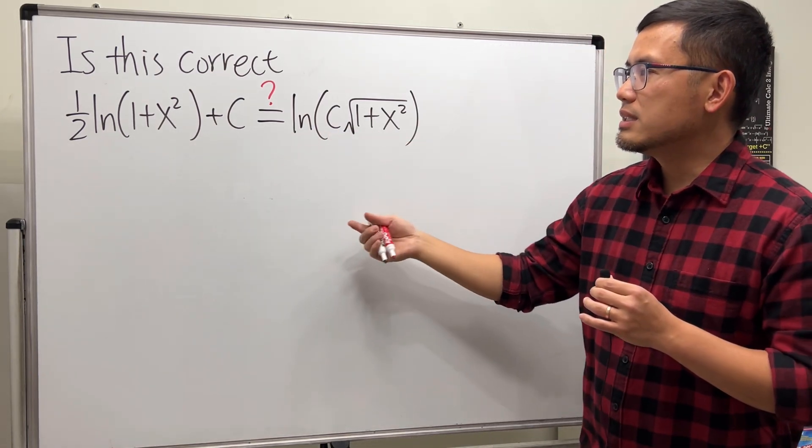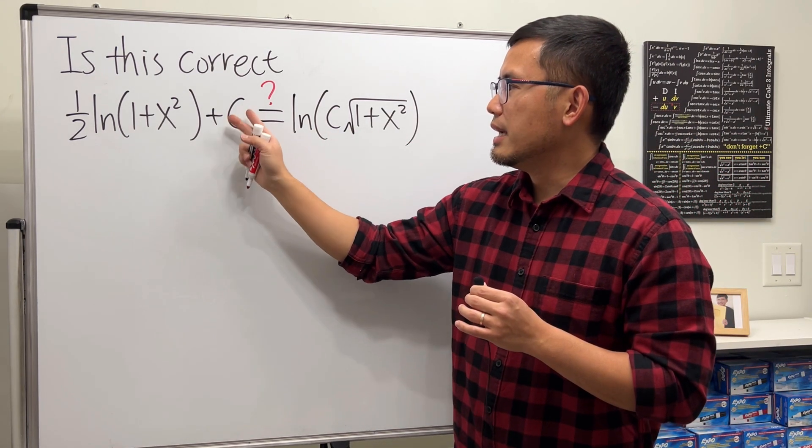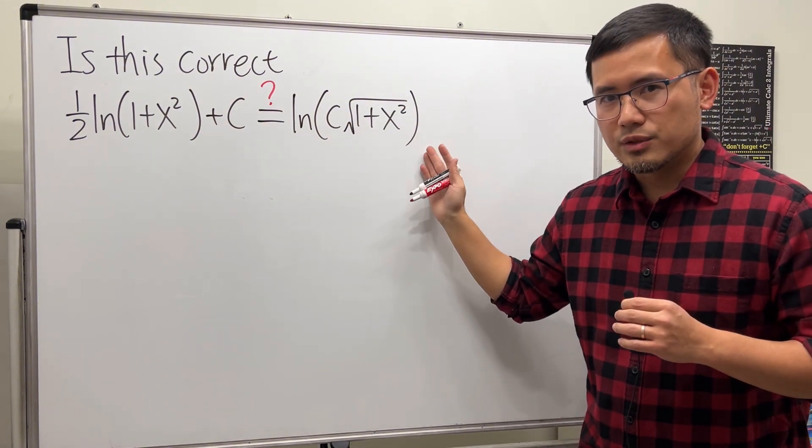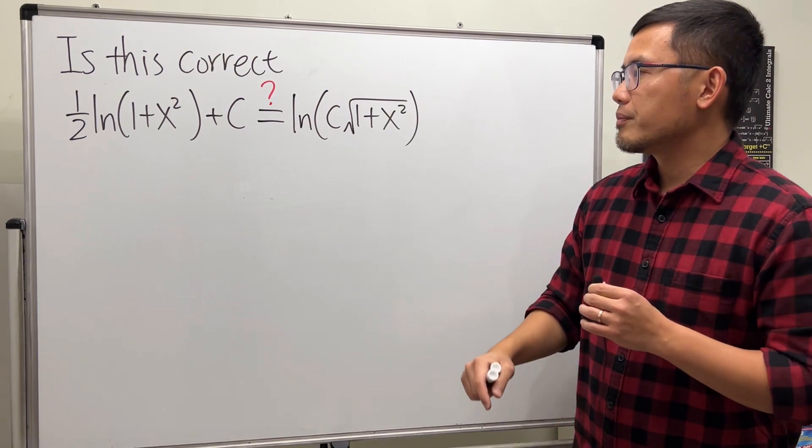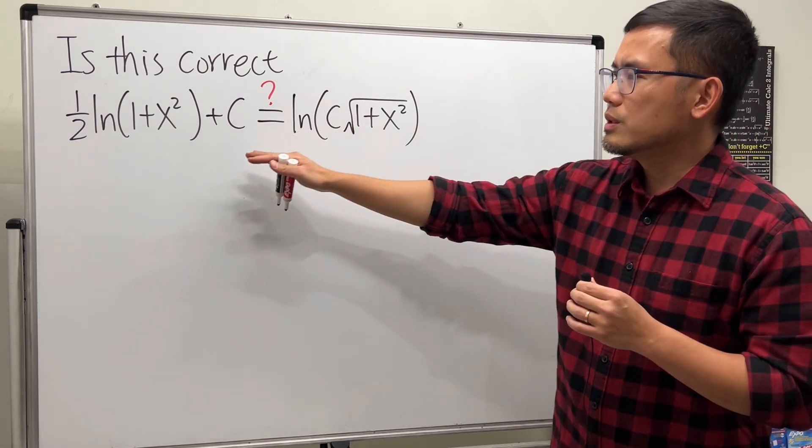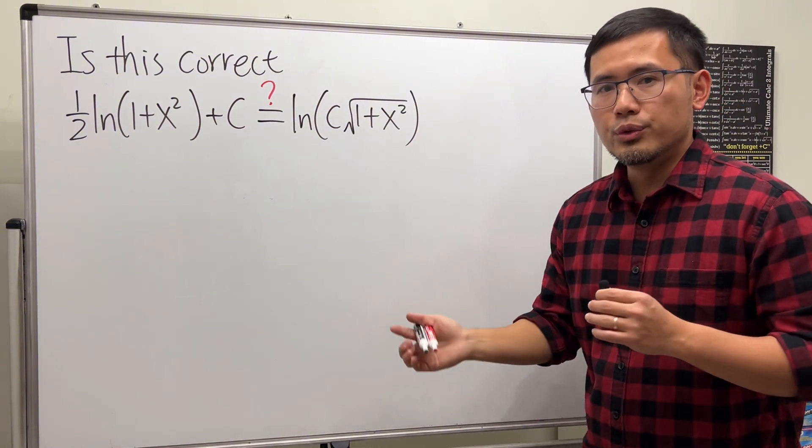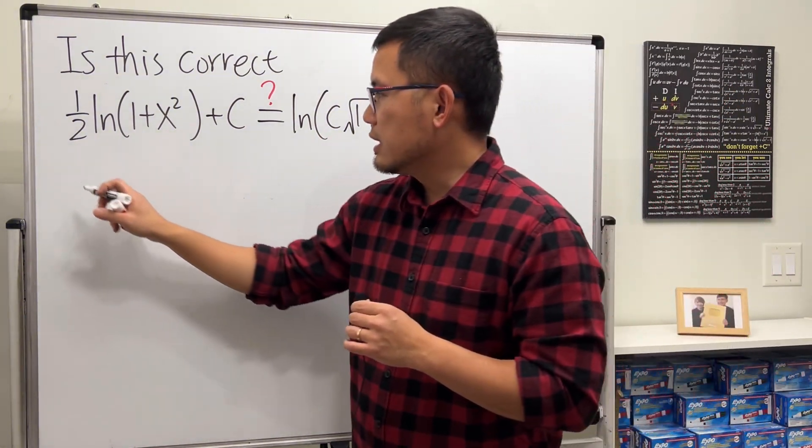Well, if you're not doing an integral, if you're just looking at this as an equation, let's say if you have a specific c like seven here and seven here, then no, this is not a correct equation. But let's see how we can get from here to this form.